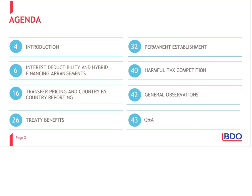After a brief introduction by me, we will deal with the recommendations on interest deductibility for international businesses and hybrid financing arrangements, transfer pricing and the new country-by-country reporting requirements, treaty benefits and the recommendations designed to prevent tax treaty abuse, the impact of the recommended changes to the definition of permanent establishments, and harmful tax competition and the impact of the recommendations on preferential tax regimes. We'll follow this with observations from our colleagues in the world's two largest economies, the U.S. and China, and then we'll conclude with a Q&A.